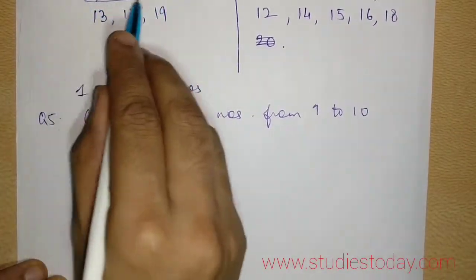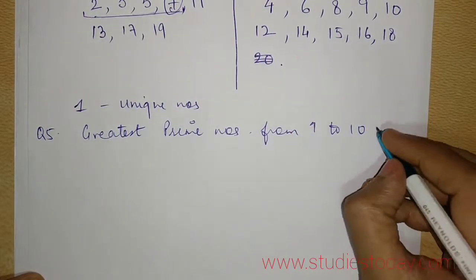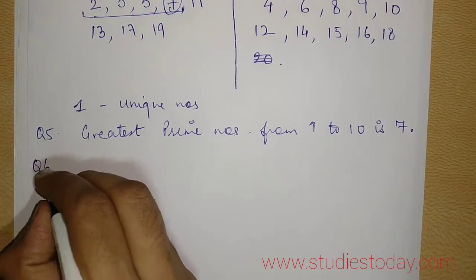So greatest prime number from 1 to 10. See which number is greatest? It is 7.